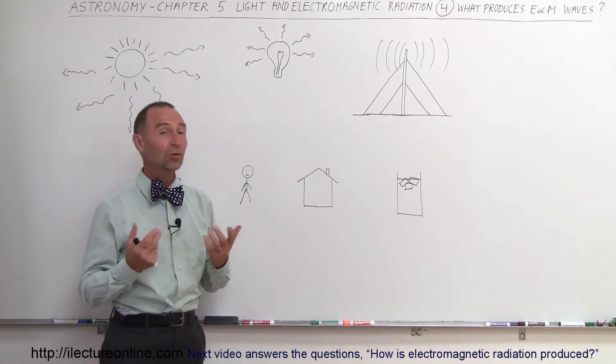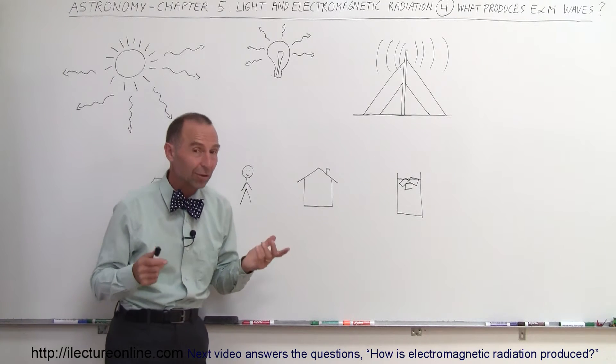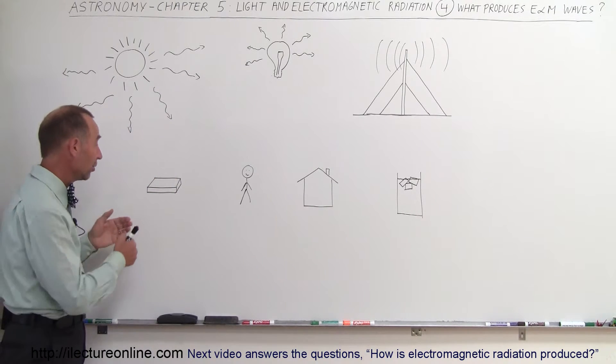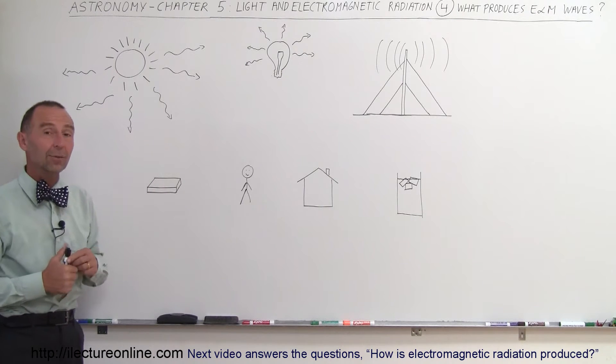So that's usually what we think about, but it turns out other things produce electromagnetic radiation as well, and that's sometimes very, very surprising. You can have a brick sitting around like that, and sure enough, a brick will produce electromagnetic radiation.